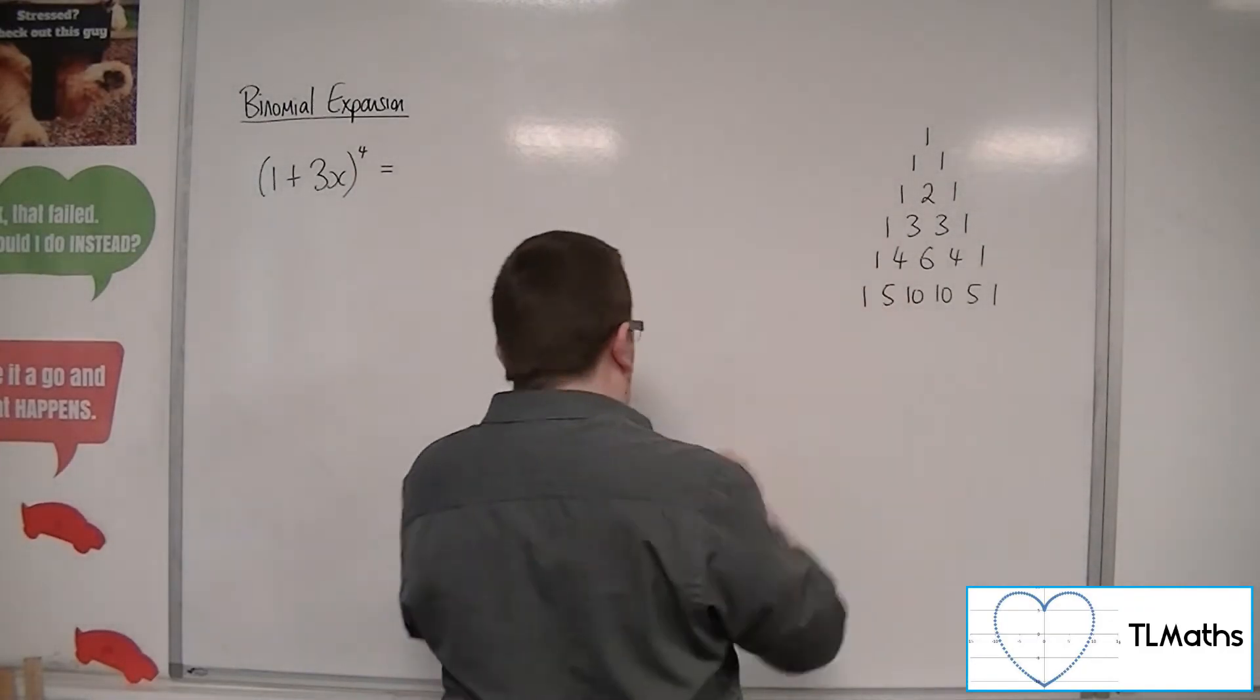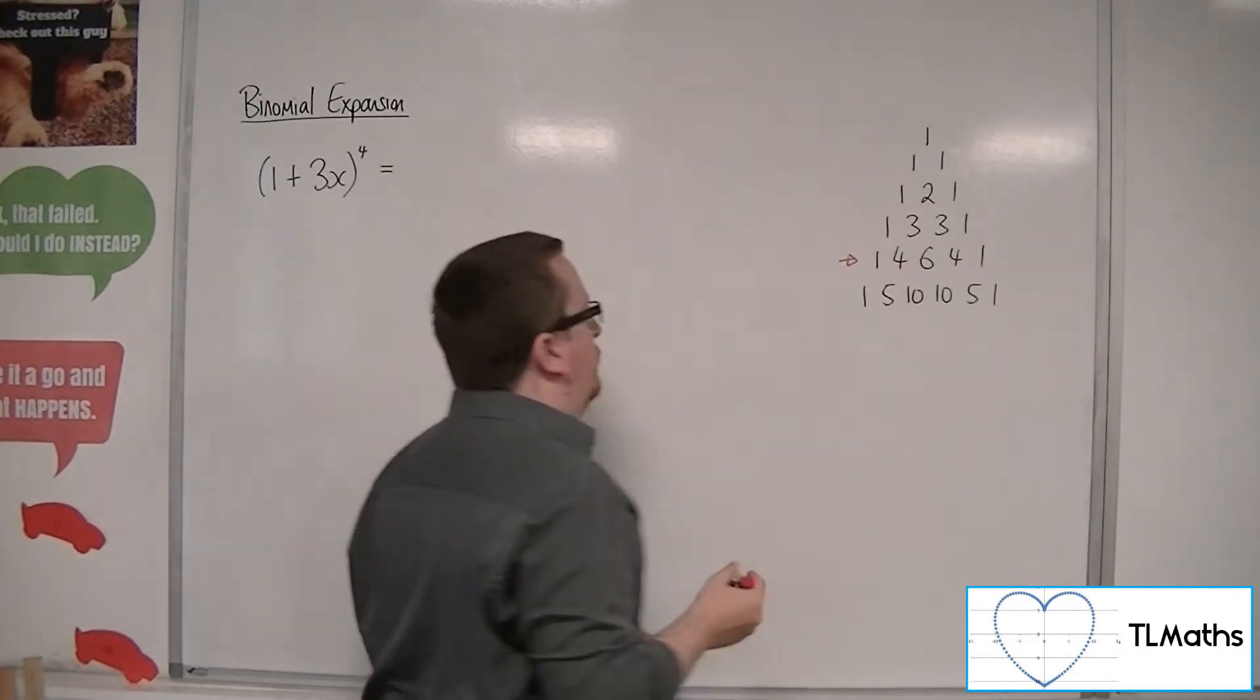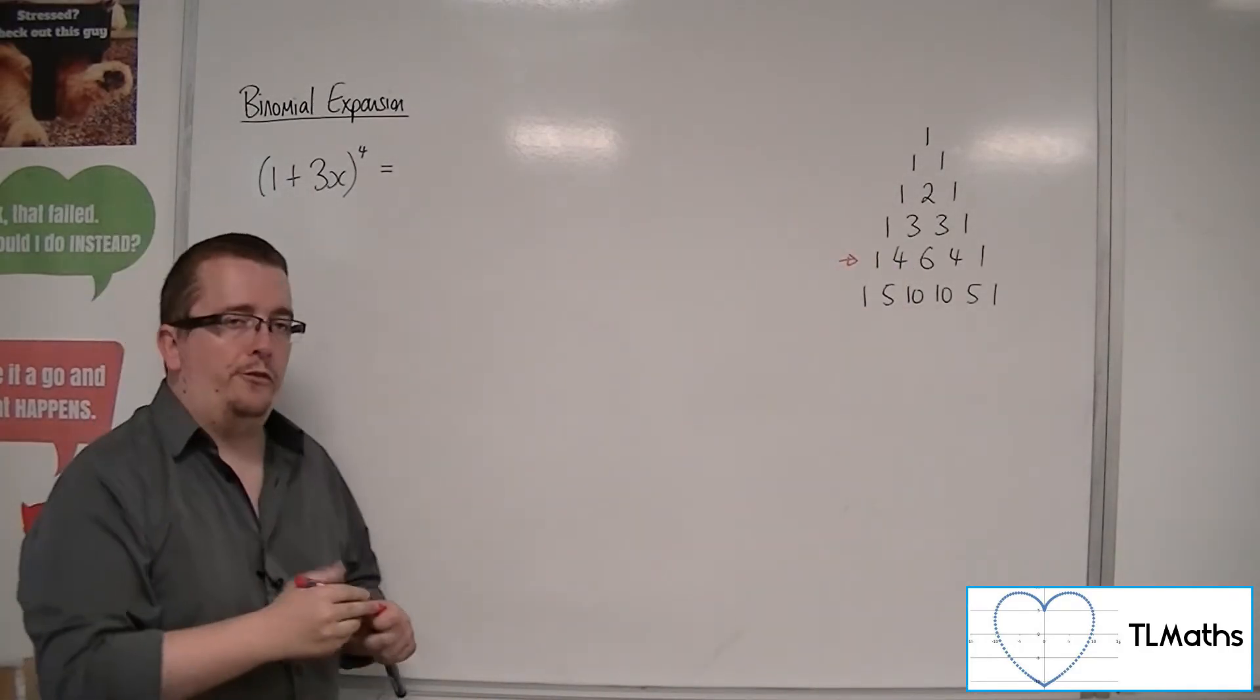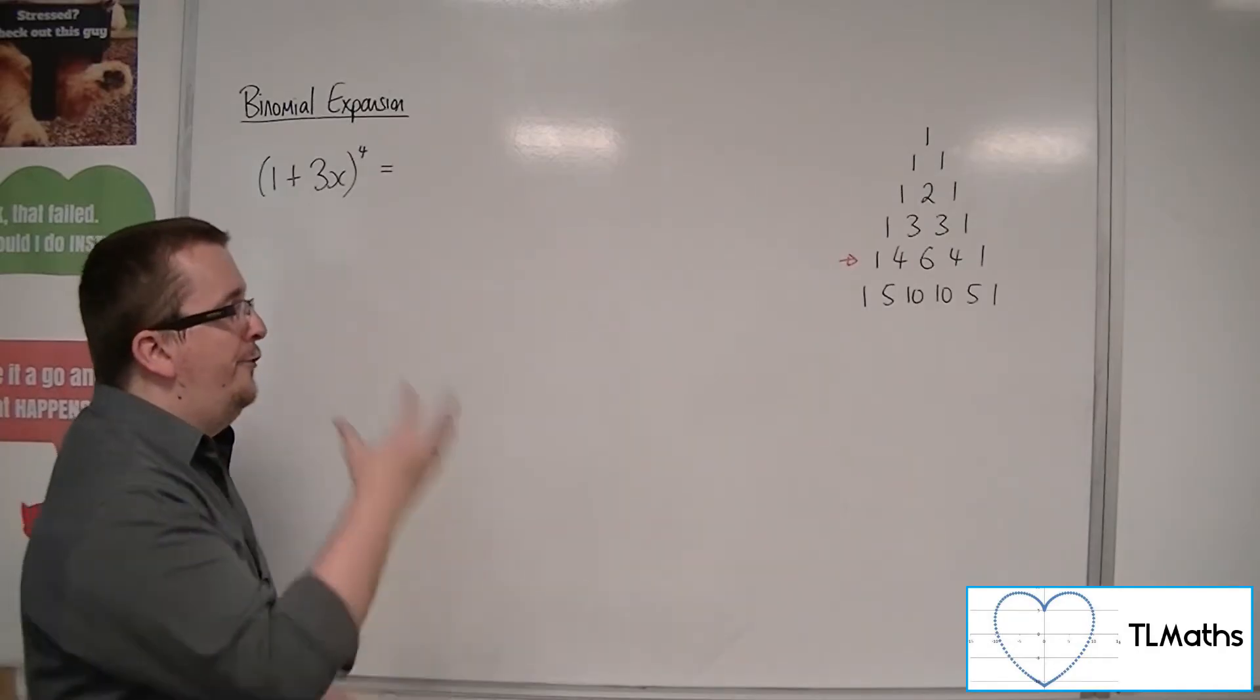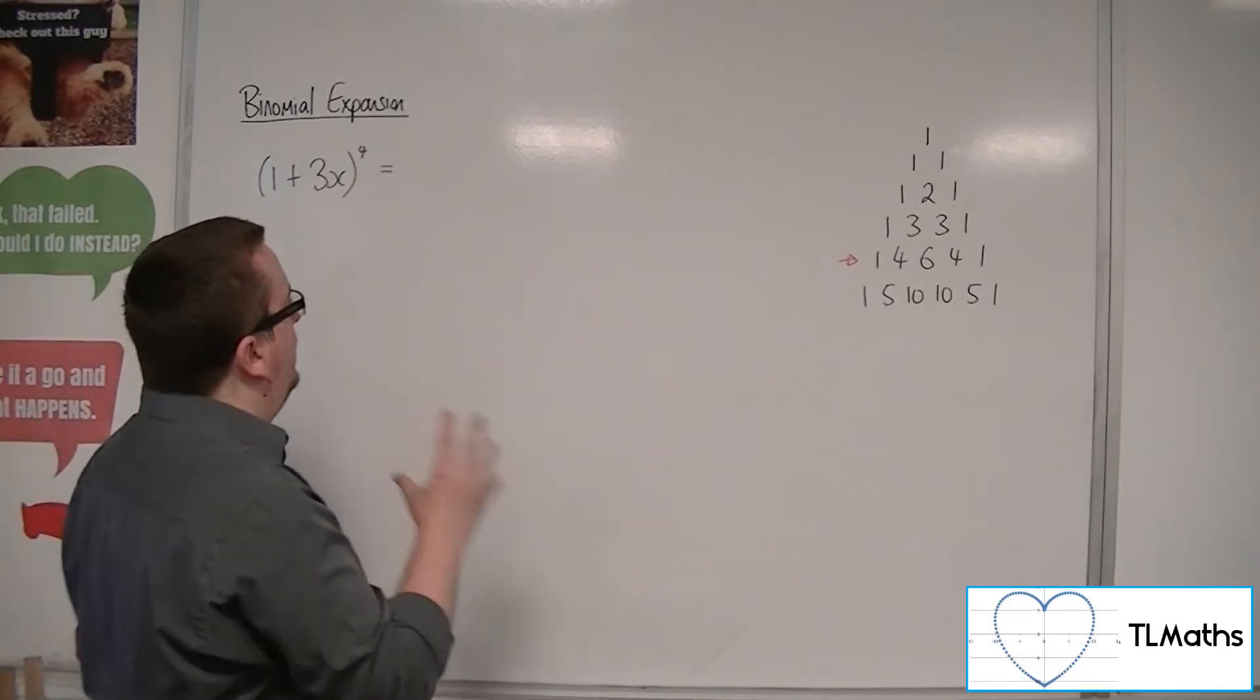The 4 is representing this row in Pascal's triangle: 1, 4, 6, 4, 1. And so we need 5 pieces, 5 terms.